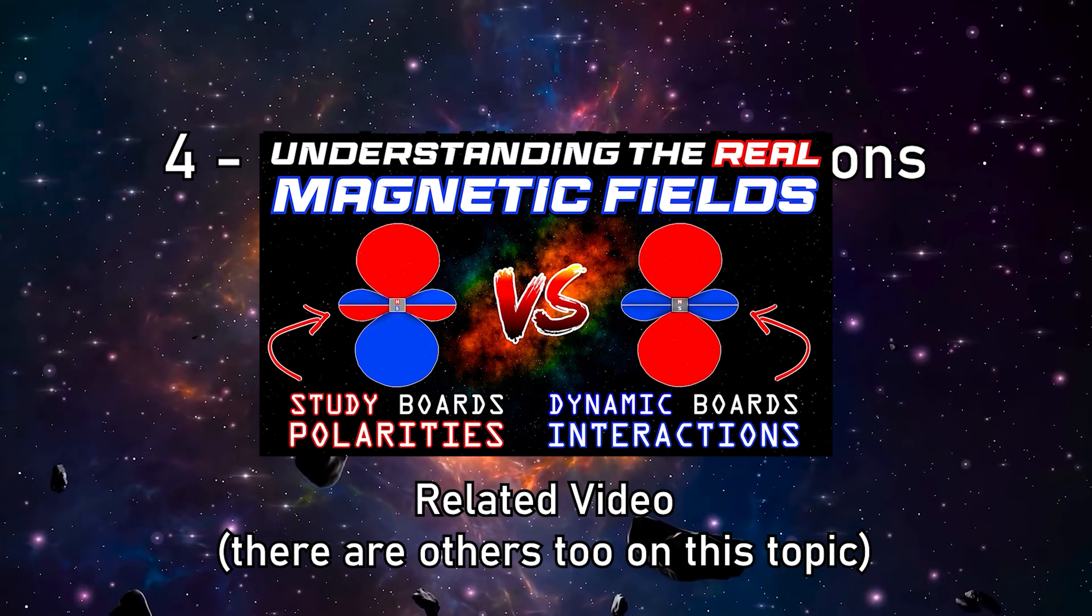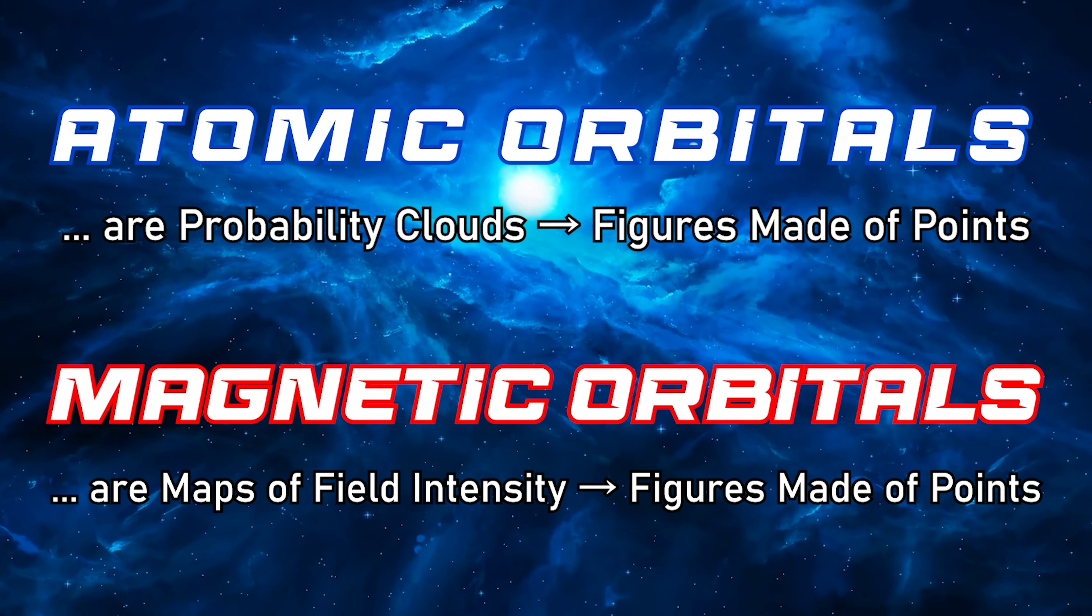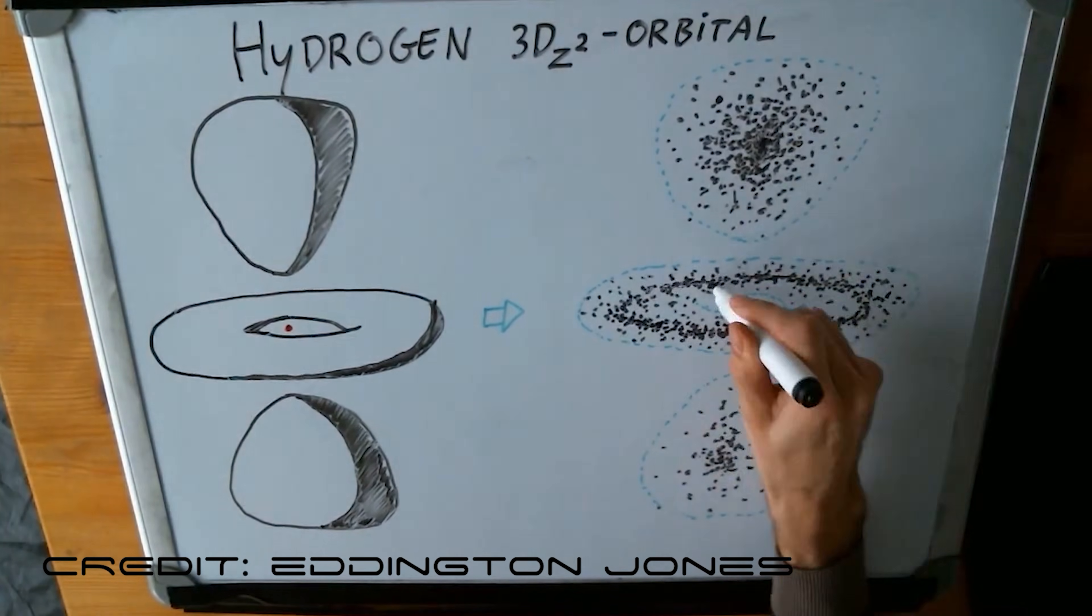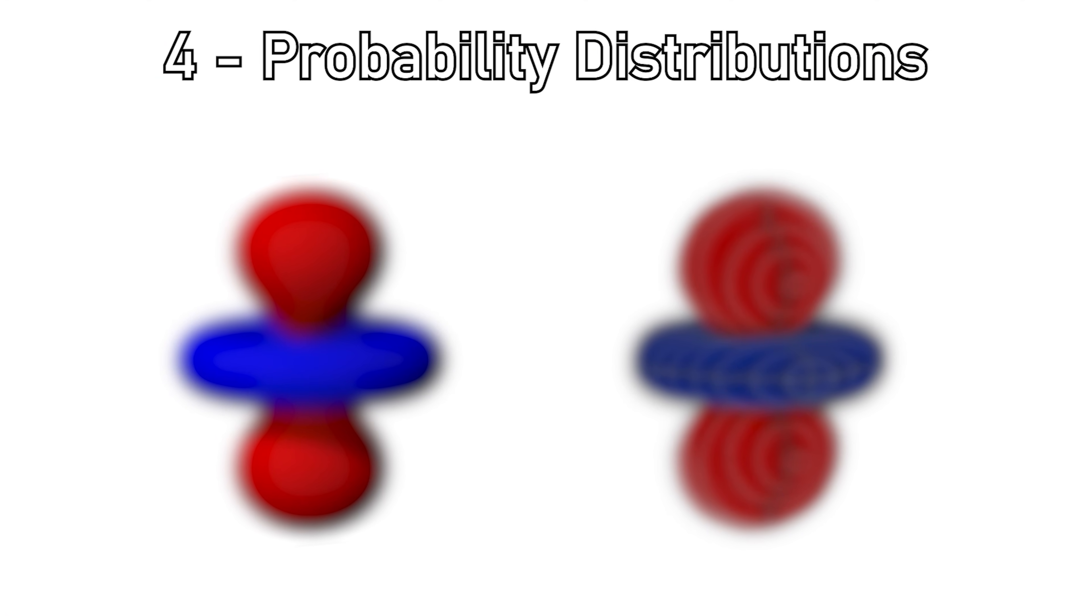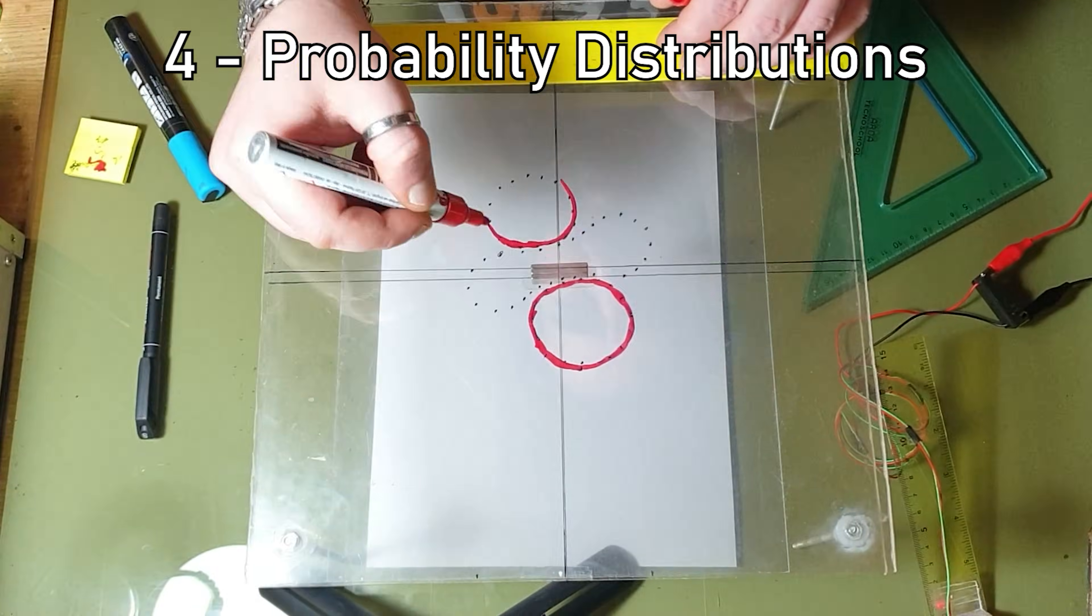4. Probability Distributions. The construction of these shapes is comparable to electronic probability distributions, not by aesthetic similarity, but by physical principle. The field intensity decreases with distance, and geometry emerges as a spatial distribution of interaction probability, not as a single trajectory.